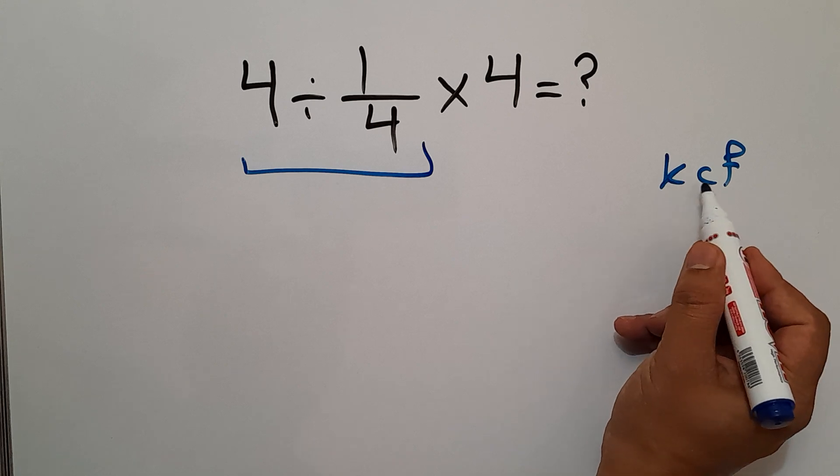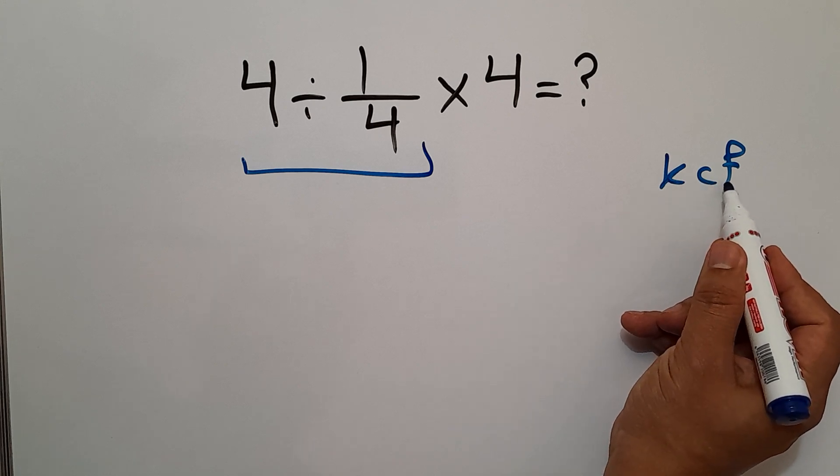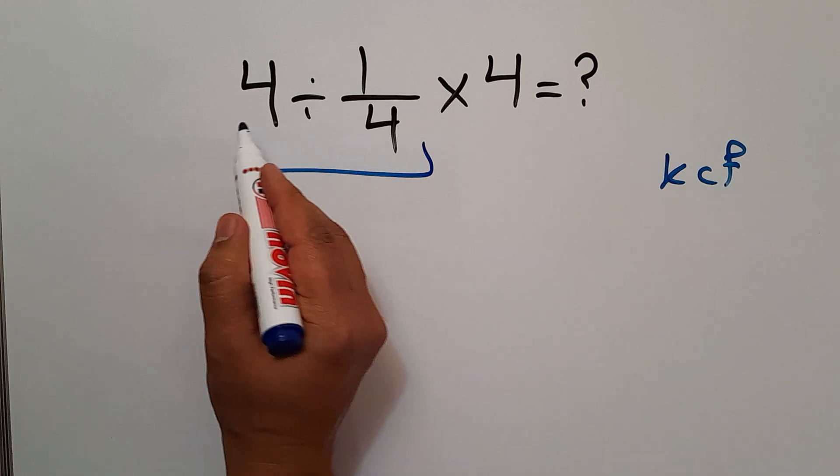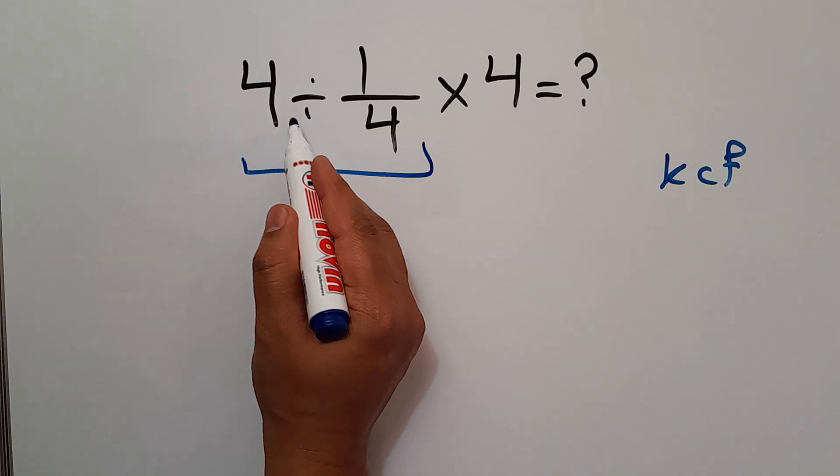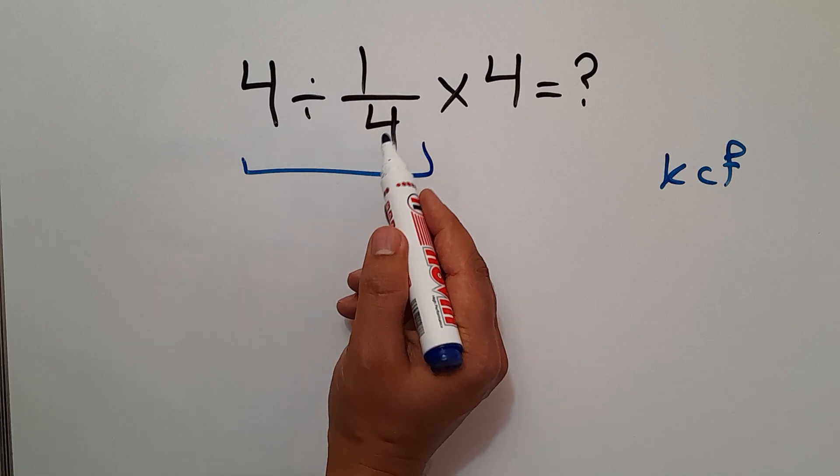K stands for keep, C stands for change, and F stands for flip. Keep the first fraction, change division to multiplication, and flip the second fraction.